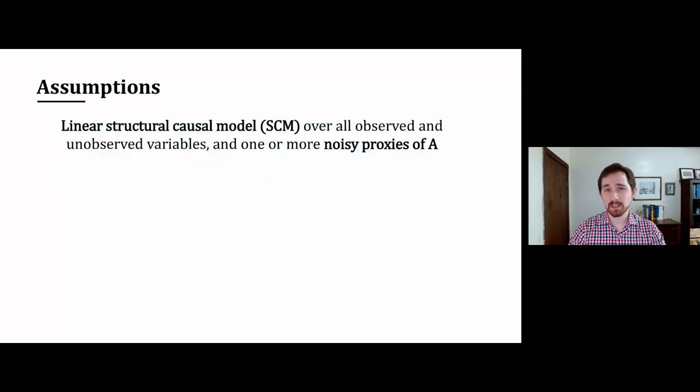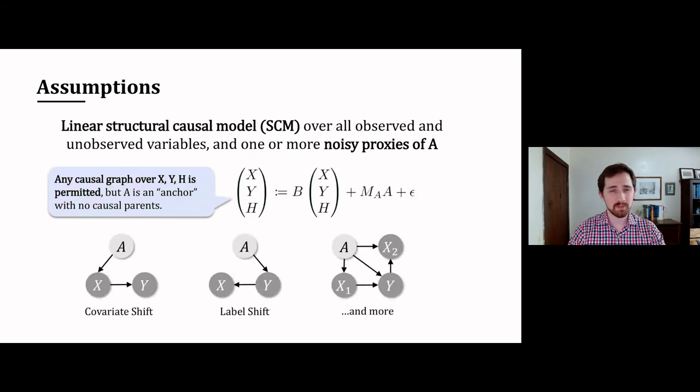This is going to require some assumptions. First, we'll assume a linear structural causal model over all observed and unobserved variables. All variables are related linearly to each other with independent additive noise, but we are not making any restrictions on the causal graph between X, Y, and even additional hidden variables H. But we will require that A is an anchor variable with no causal parents. So while we are making an assumption of linearity, all of the graphs that you see at the bottom of the slide are permitted under our assumptions.